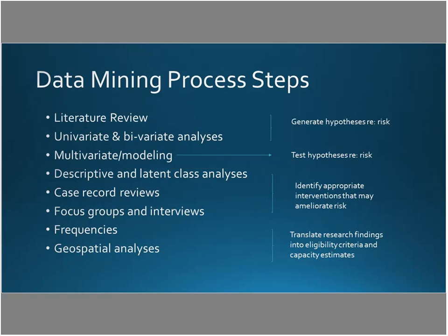Now I'll walk you through what I think are the steps for this data mining process — and I've not included the variable definition piece. The first step in the process, as it went in Illinois, was to look at everything we already know. That meant a literature review, and also assembling a group of researchers. In Illinois, we're very fortunate to have many university partners who've spent years using the data to help the child welfare system understand their challenges. We brought all those people to the table to consolidate everything we already knew about kids who were at greatest risk for getting stuck in foster care.